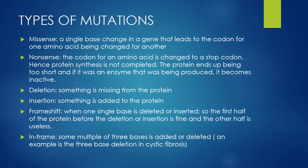Now we're going to take a look at the different types of mutations. The first type is a missense mutation. In a missense mutation, a single base is changed in the gene and that leads to the codon for one amino acid being changed to the codon for another amino acid. We see this in sickle cell anemia, where the codon for glutamic acid is changed into the codon for valine, and that is where we see the disorder.